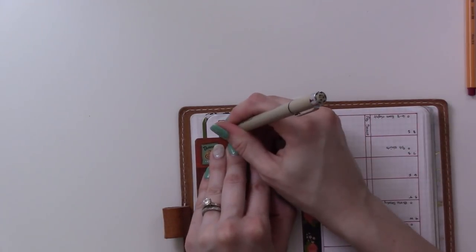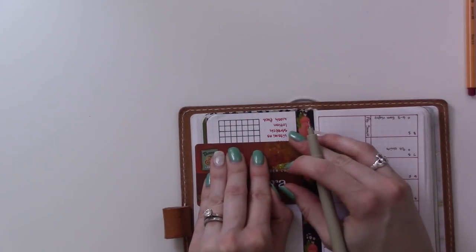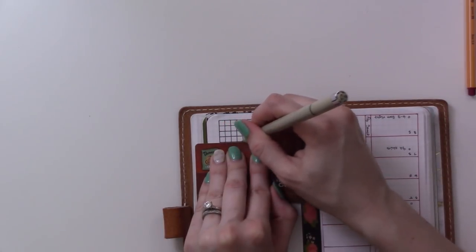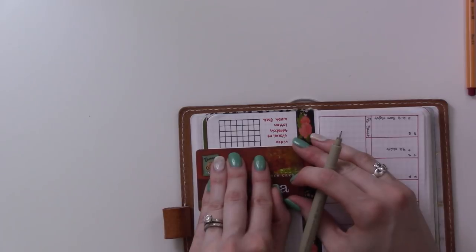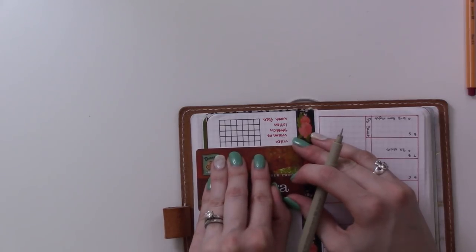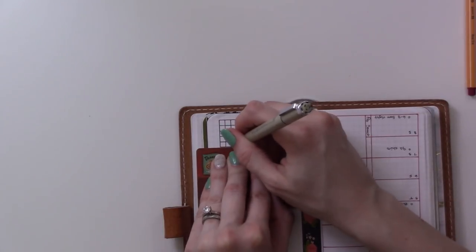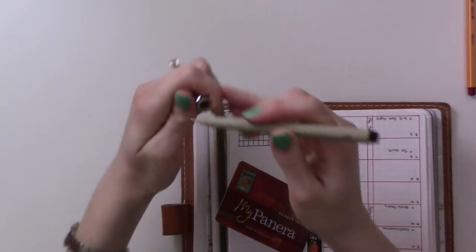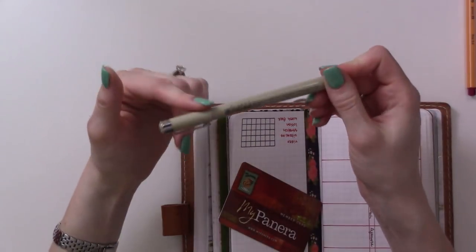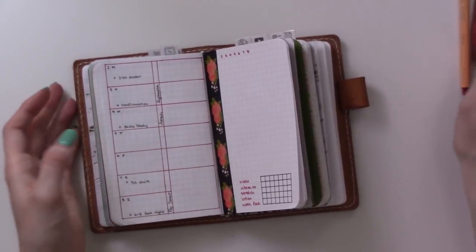I mostly just use the Pigma Micron for black whenever I need black. It helps in cases like this because when I'm using the water-based highlighter, I use the Zebra Mildliners to fill in my habit tracker. This Pigma Micron ink is waterproof so it's not going to smudge when I fill it in.